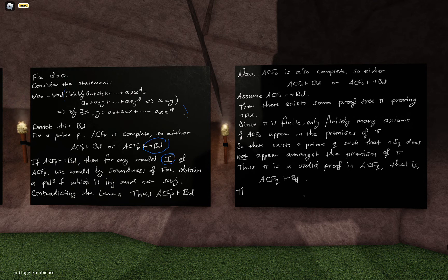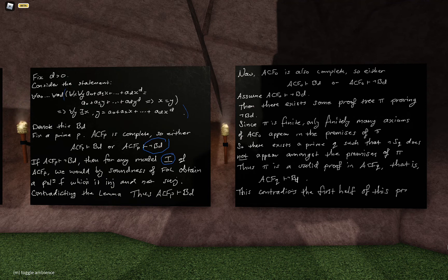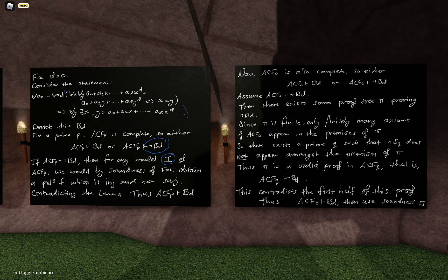Therefore there is some prime such that the negation of S_q does not appear amongst the premises of pi. That's the crucial step allowing us to transport this proof into one of ACF_q for some q. Since pi is finite, only finitely many axioms of ACF_0 appear amongst the premises of pi. So there's some prime q such that the negation of S_q does not appear amongst the premises of pi. That means I could work inside a first-order theory where S_q is one of the axioms, and pi is still a valid proof inside that system. One such system is ACF_q, but that contradicts the first half of this proof.